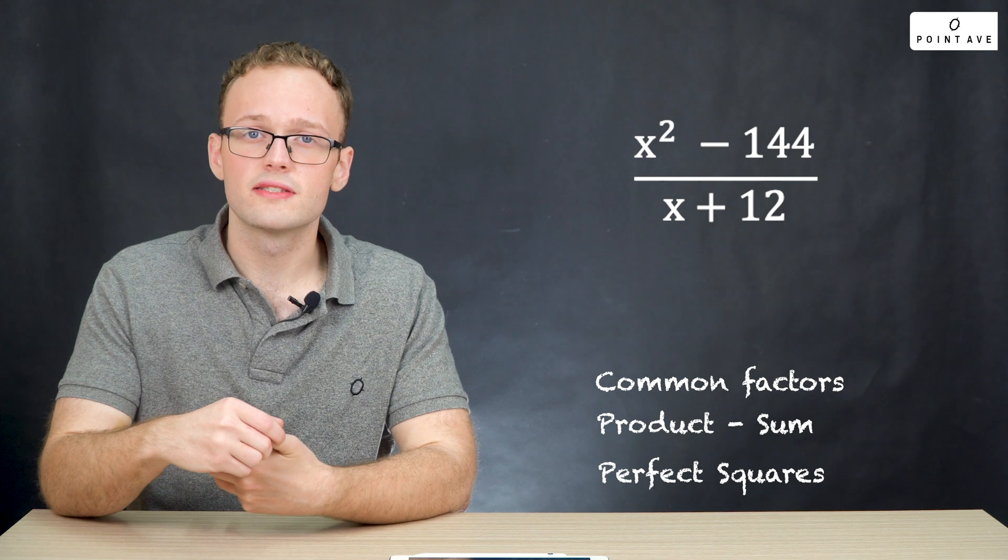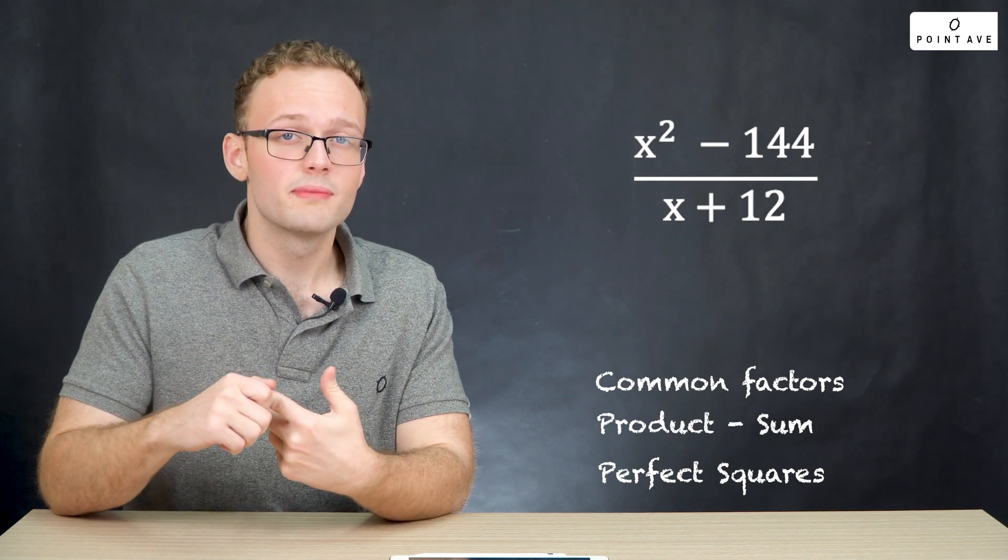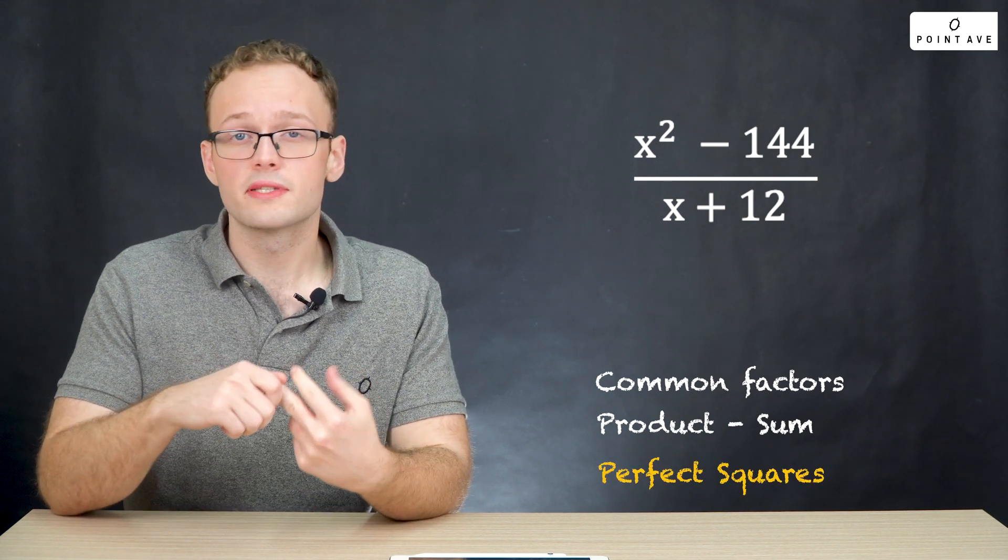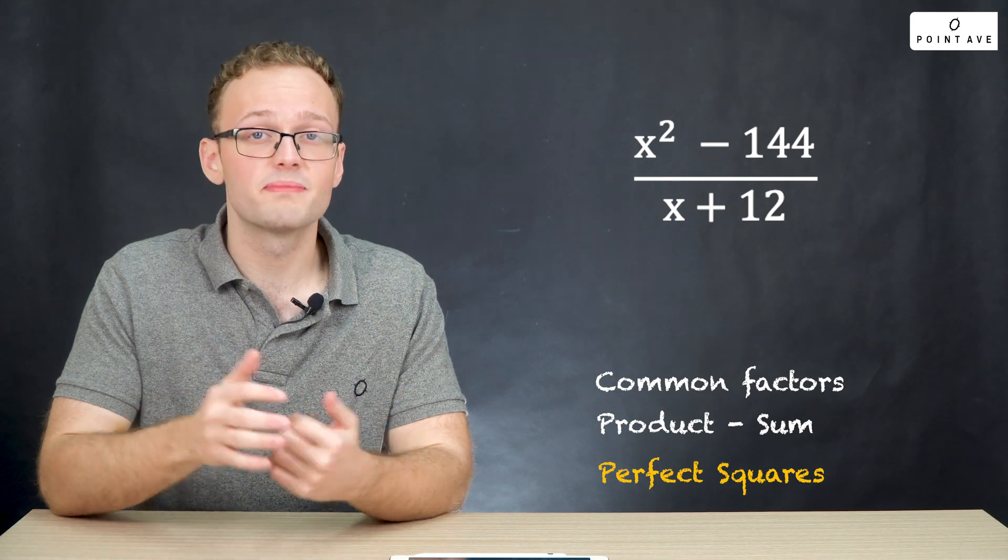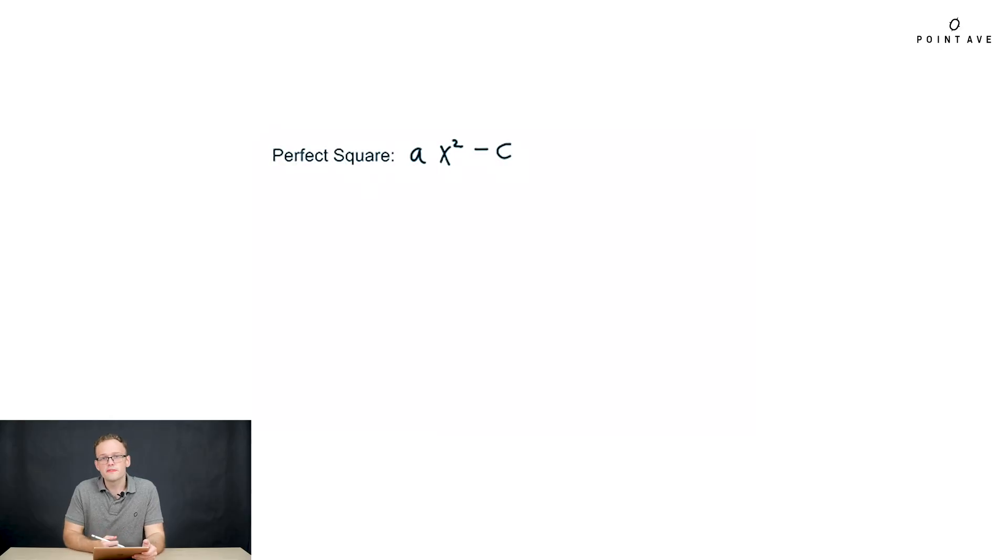There are no common factors, and product sum could work, but this is a case where perfect squares is going to work much better. We can identify perfect square expressions as something of the form ax squared minus c. Note that there's no b term, no x term in the middle, and very importantly, note that there's a minus on the c. If it's positive, you cannot use perfect squares.